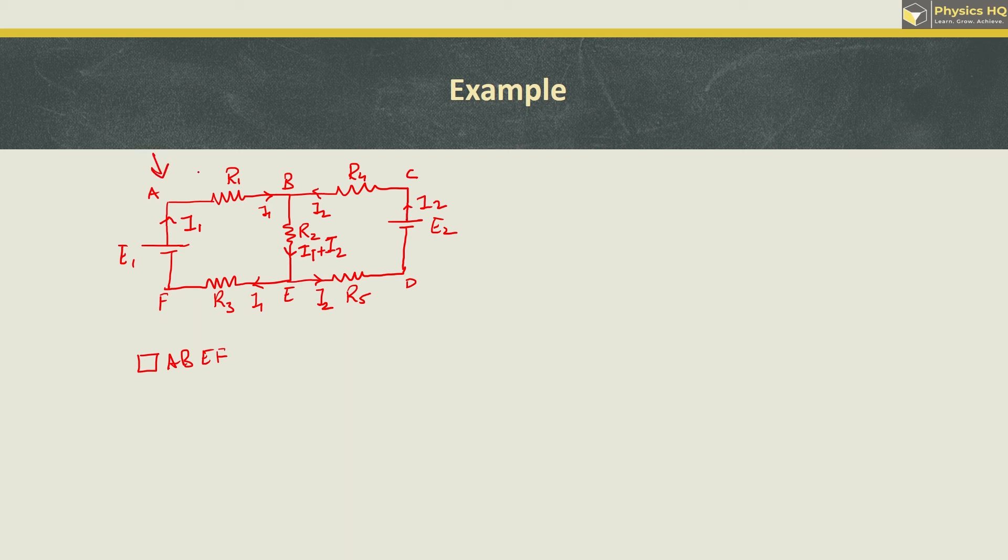First, we start at point A and go clockwise. We will write the clockwise equation. Now have a look. When I go from A to B, what is the potential drop? Current is I1, resistance is R1, and we are going in the direction of the current. So we look for the second sign.